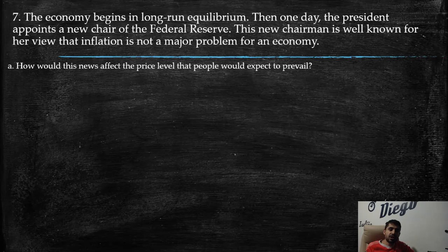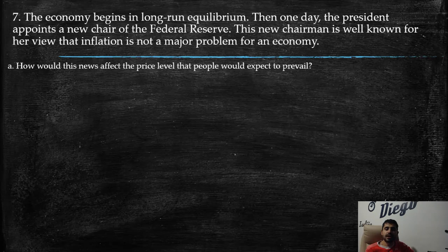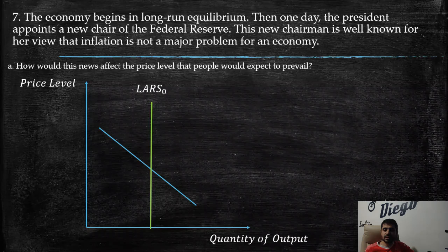Exercise 7: The economy begins in long-run equilibrium. One day the president appoints a new chair of the Federal Reserve. The new chairwoman is well known for her view that inflation is not a major problem for an economy. Part a: How would this news affect the price level that people would expect to prevail? We are in equilibrium at price level P0 and output Y0.